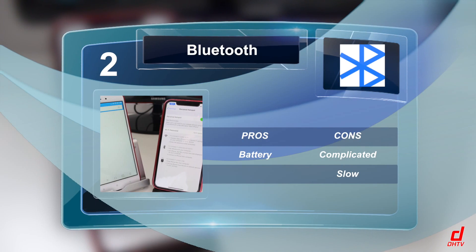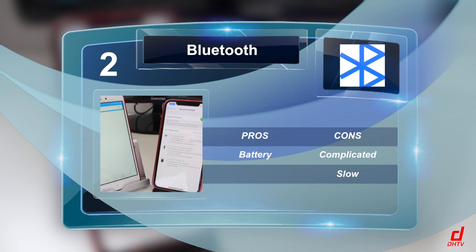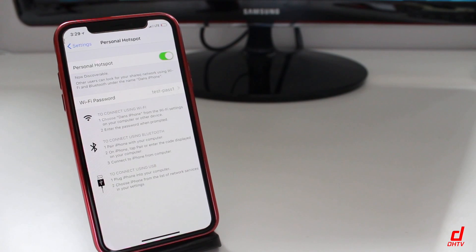The second option, Bluetooth, is my least favorite. It's a little bit tedious to get connected since different devices will show up differently, it may be hard to pair with some of them, and sometimes the device has to be paired and then also connected through the Wi-Fi network, so you have to go through a lot more of a process. I also find it to be very slow in terms of connection speeds.